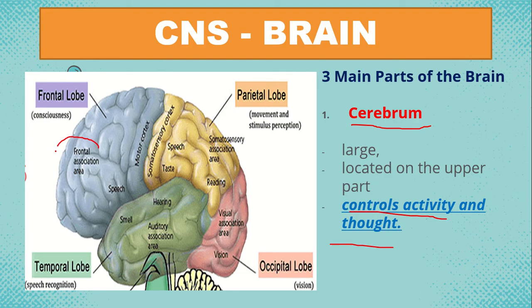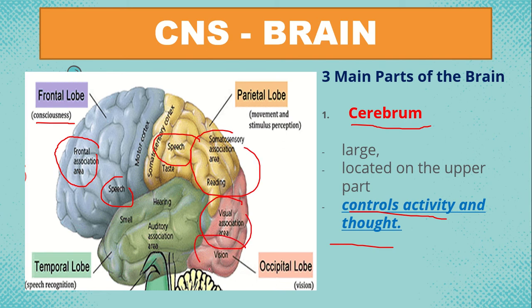For example, on the frontal lobe we have consciousness and speech. For the parietal lobe, we have reading, speech, and visual processing. The occipital lobe is at the back of the brain and is responsible for vision. The temporal lobe is responsible for smell and other functions.